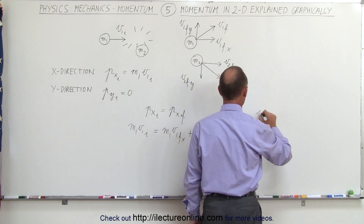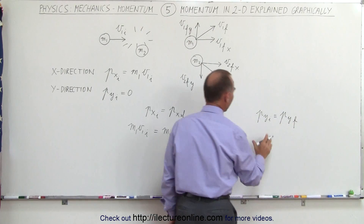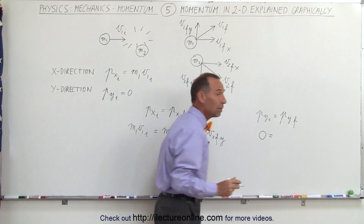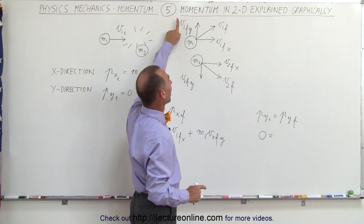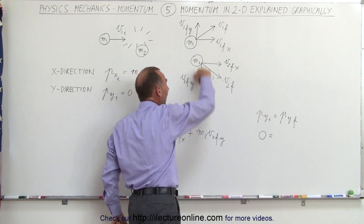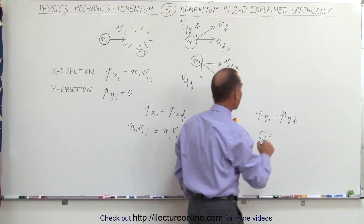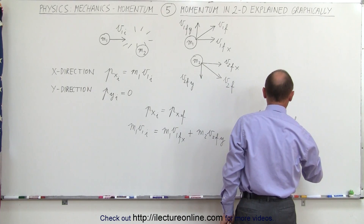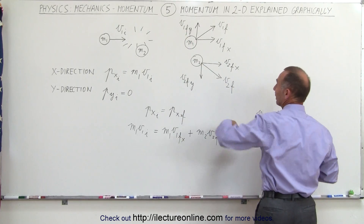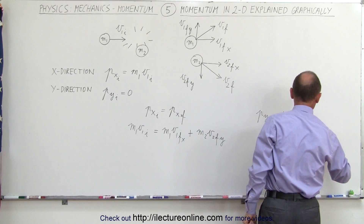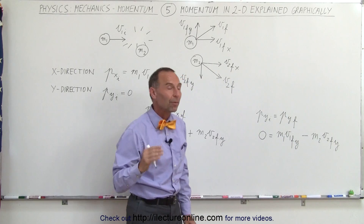And in the y-direction, p-initial in the y-direction must equal p-final in the y-direction. In this case it's zero, which means they must add up to zero after the collision as well. Notice that this billiard ball goes upward in the y-direction — that's positive momentum — and this billiard ball goes downward, which is the negative direction, therefore that's negative momentum. So we can write: m1 v1 final in the y-direction minus m2 v2 final in the y-direction equals zero.